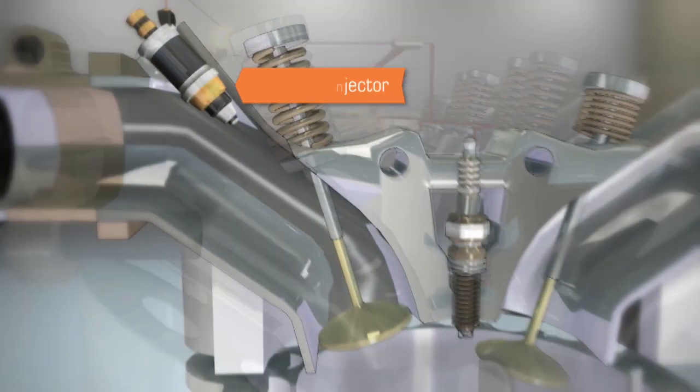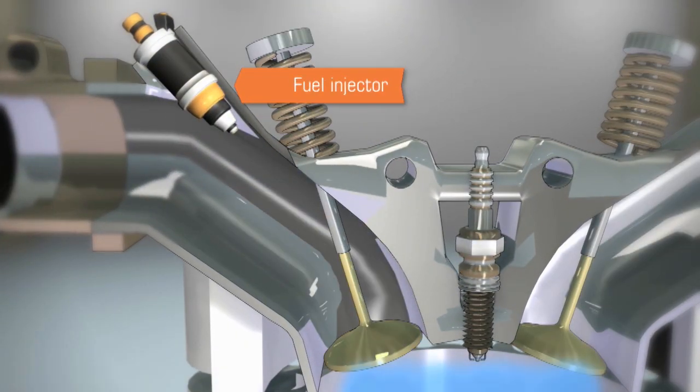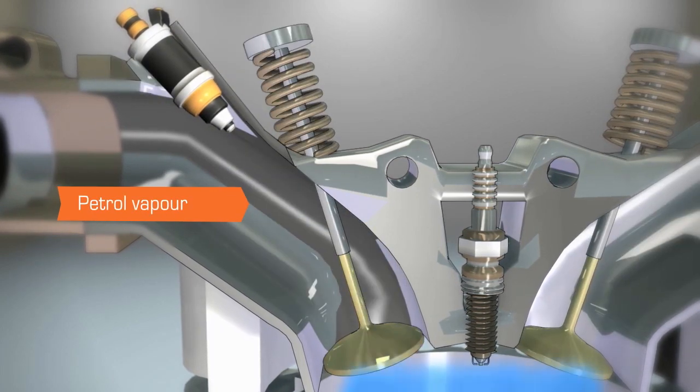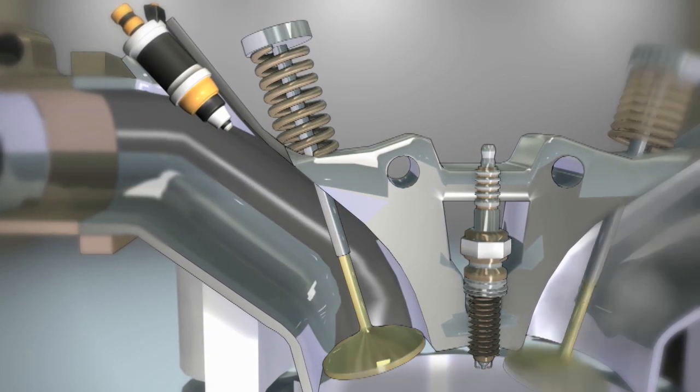The fuel injector sprays a fine mist of fuel droplets that quickly evaporate and mix with air to become fuel vapour. The smaller the size of these droplets, the easier the petrol will vaporise.